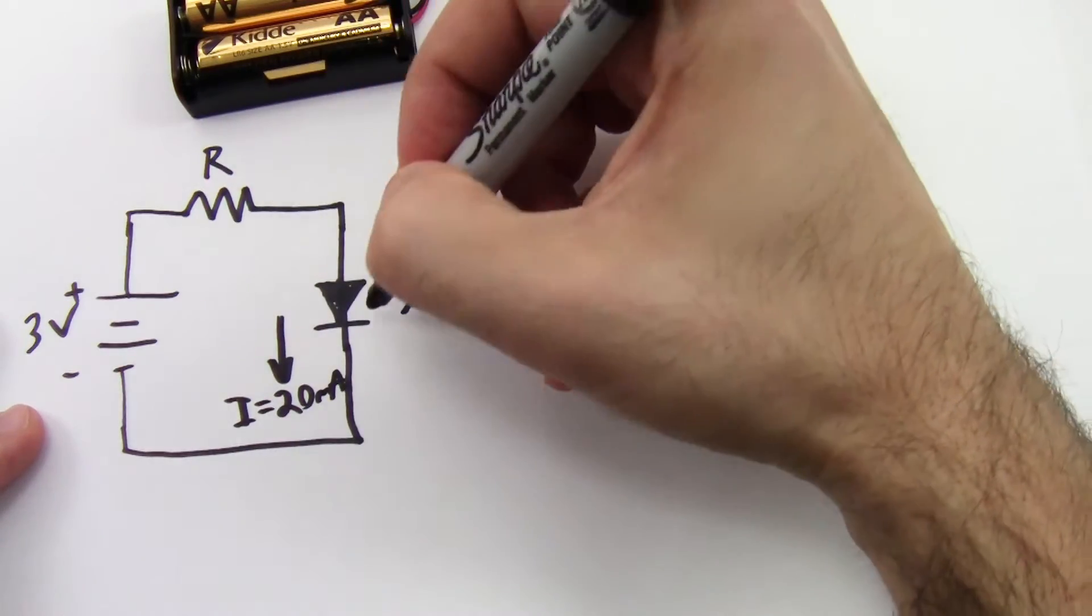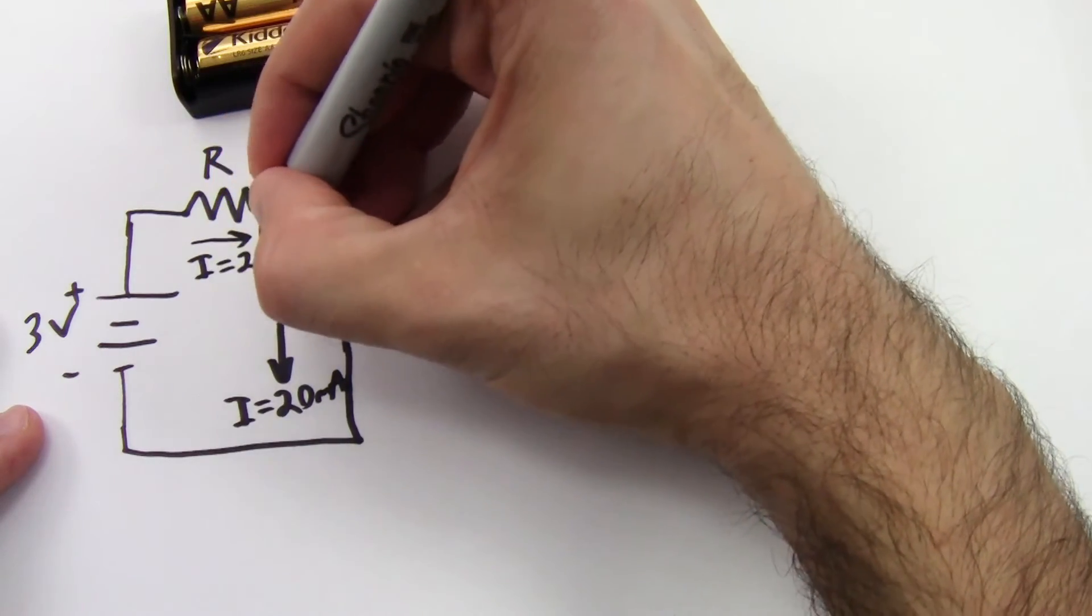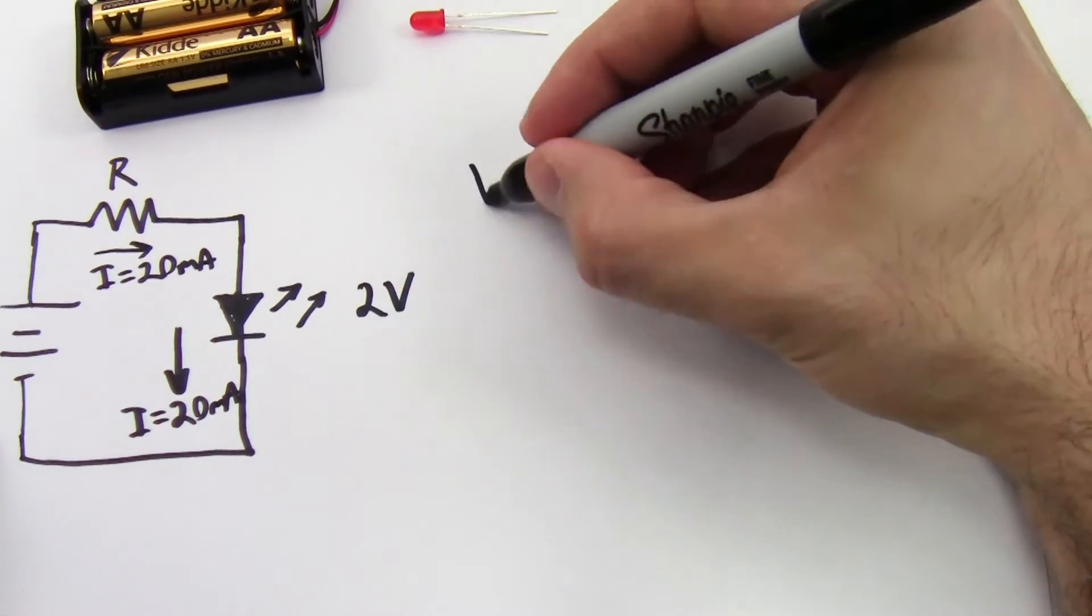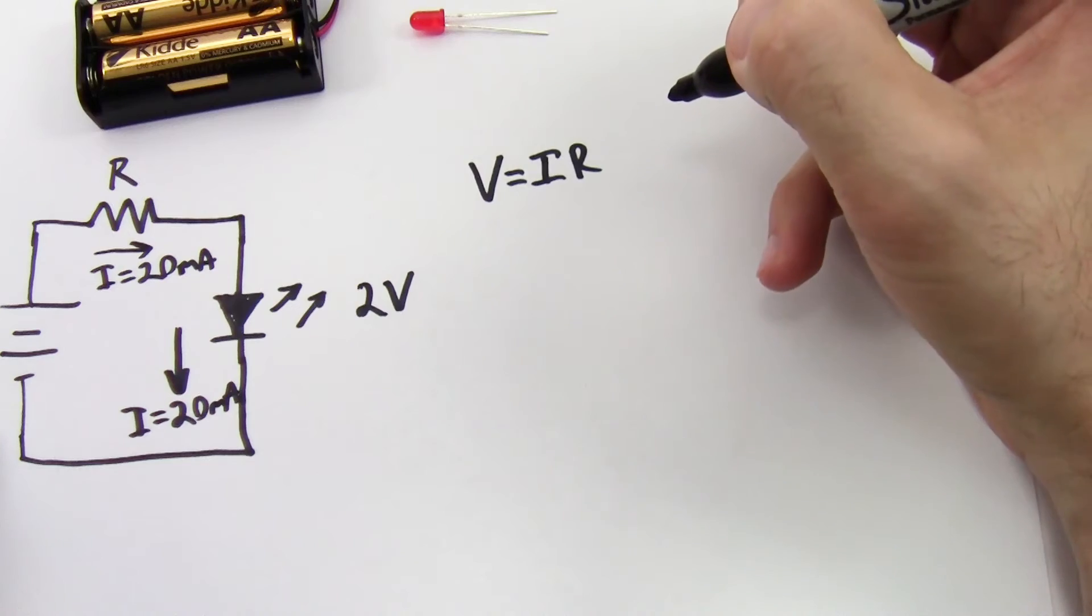Since the resistor is in series with the LED, I also know that the current through the resistor is going to be 20 milliamps. And I know for a resistor, Ohm's Law applies, which is V equals IR, or voltage equals current times resistance.